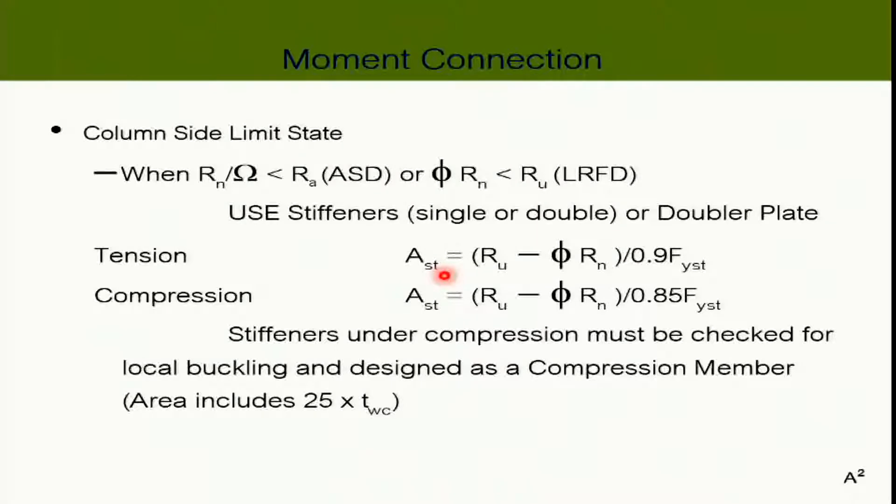If we check all this stuff and we cannot get our column to carry the load, we need to add the stiffeners. Let's say if the column can carry 100 tons and you have 120 tons from the moment, you need to add the stiffeners to take care of the remaining 20 tons, which exceeds the column capacity. So if you ask the column to take whatever it can take and then the rest, we just add stiffness to take care of it. And that's it.